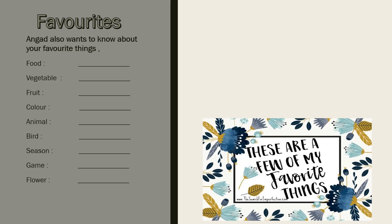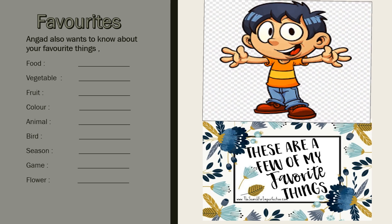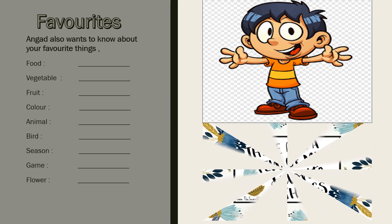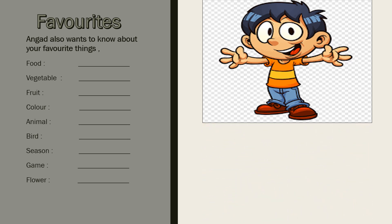Children, now Angad also wants to know about your favorite things. You must share your favorite things with Angad. You will write down the name of your favorite food, vegetable, fruit, color, animal, bird, season, game, and flower.